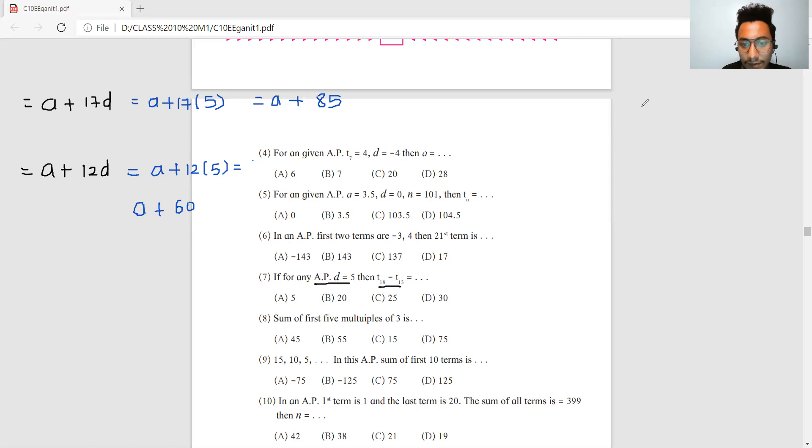Now you need to subtract T13 from T18. So T18's value is a plus 85 minus a plus 60. Open the bracket: a plus 85 minus a minus 60. 85 minus 60 gives you 25. Your answer is 25.